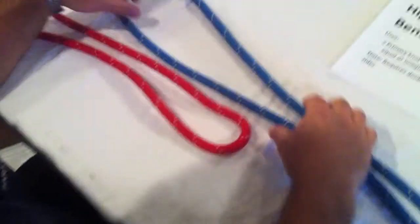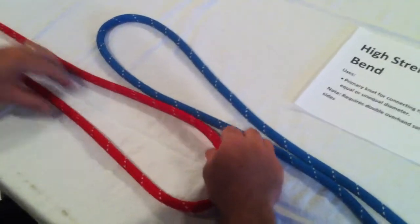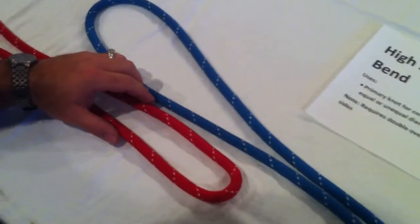Hi guys, in this episode we'd like to cover the high strength sheet bend. It's basically going to be a slight variant on the normal sheet bend, if you've learned to tie that knot before. It's just going to have an extra loop thrown in.